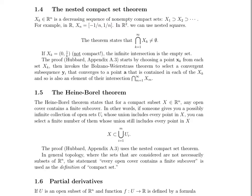What the theorem states is that the infinite intersection of these x sub k's does not equal the empty set. Note that we require that these are non-empty compact sets. If we used some x sub k's that were not compact — that were open intervals from 0 to 1 over k — then the infinite intersection is the empty set.